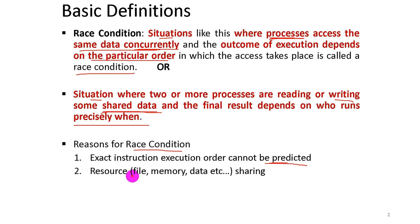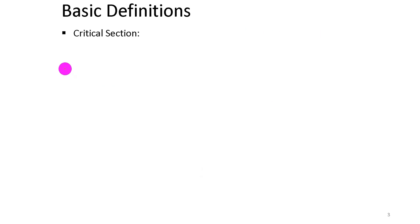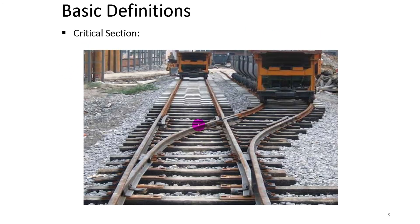Shared resources like files, memory, or data — when these are shared between processes, there is a risk of a race condition. There is also a critical section involved.